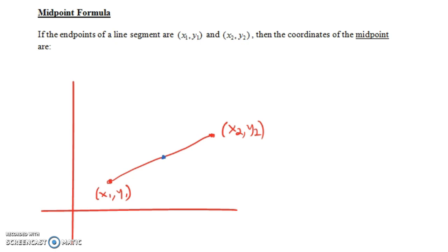The midpoint formula says if the endpoints of a line segment are (x1, y1) and (x2, y2), then the coordinates of the midpoint are—and we're going to try to come up with the formula here.